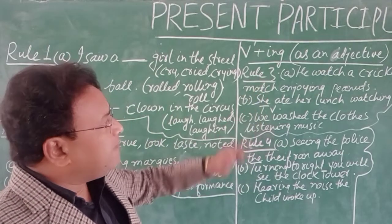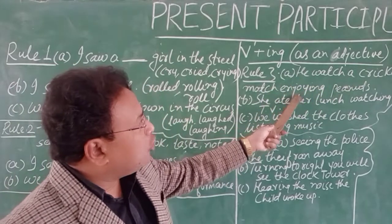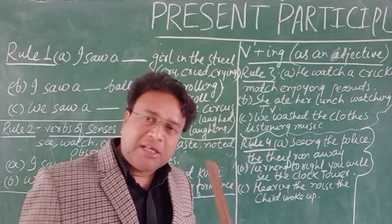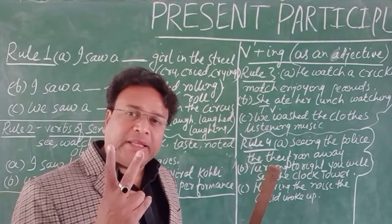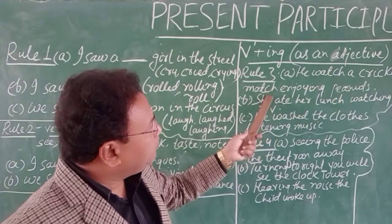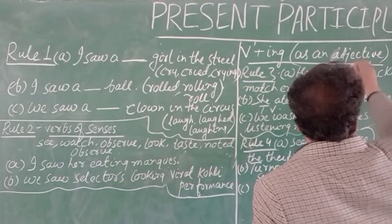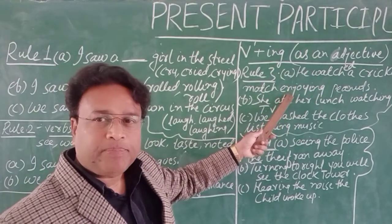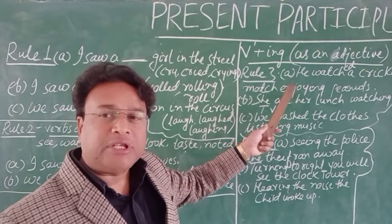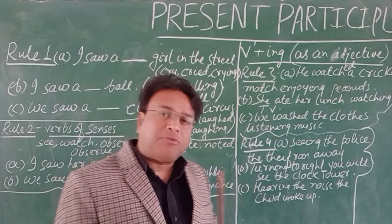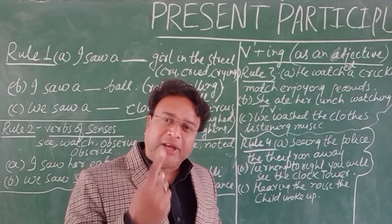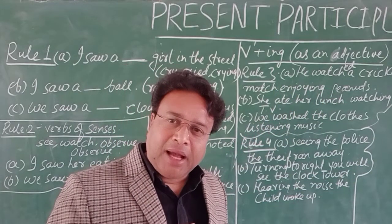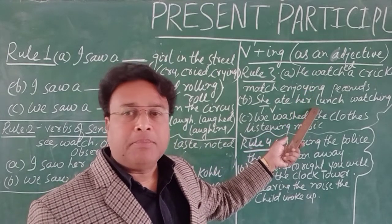Now we come to rule no. 3۔ 'He watched a cricket match enjoying peanuts.' یہاں پر ایک ہی subject کے ذریعے دو actions ہو رہے ہیں — two actions by one subject۔ اس نے cricket match دیکھا — کیا کرتے ہوئے؟ Enjoying peanuts۔ جو ساتھ والا action ہوتا ہے اس میں ہم present participle کا استعمال کرتے ہیں۔ 'He watched a cricket match enjoying peanuts' — cricket match بھی دیکھ رہا ہے اور مونگ پھلی بھی کھا رہا ہے ساتھ ساتھ۔